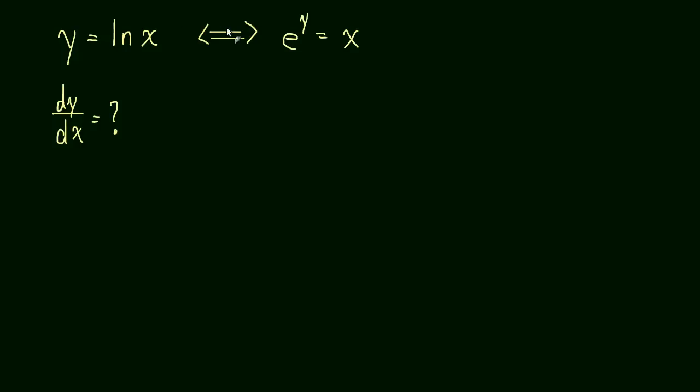And this symbol is just if and only if, so it means that y equals the natural log of x if and only if e to the y equals x. Okay, now we can take this derivative implicitly.